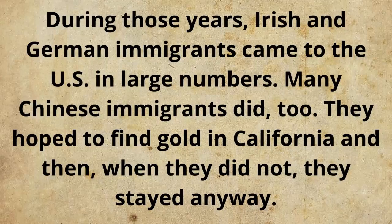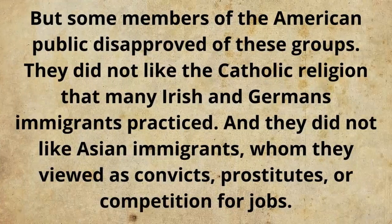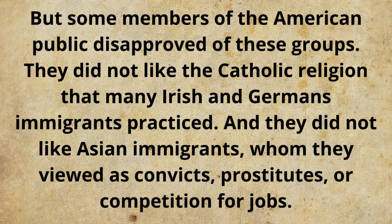During those years, Irish and German immigrants came to the US in large numbers. Many Chinese immigrants did, too. They hoped to find gold in California and then, when they did not, they stayed anyway. But some members of the American public disapproved of these groups. They did not like the Catholic religion that many Irish and German immigrants practiced. And they did not like Asian immigrants, whom they viewed as convicts, prostitutes, or competition for jobs.